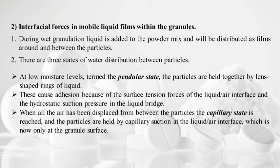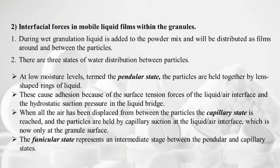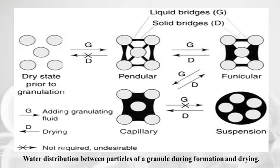When all air has been displaced between particles, the capillary state is reached — particles are held by capillary suction at the air-liquid interface, now only at the granule surface. Between pendular and capillary states is the funicular state. In summary: dry powder → pendular state (liquid bridges) → funicular state → capillary state (all spaces filled with granulating liquid) → suspension if more liquid is added. This describes water distribution between particles during granule formation and drying.